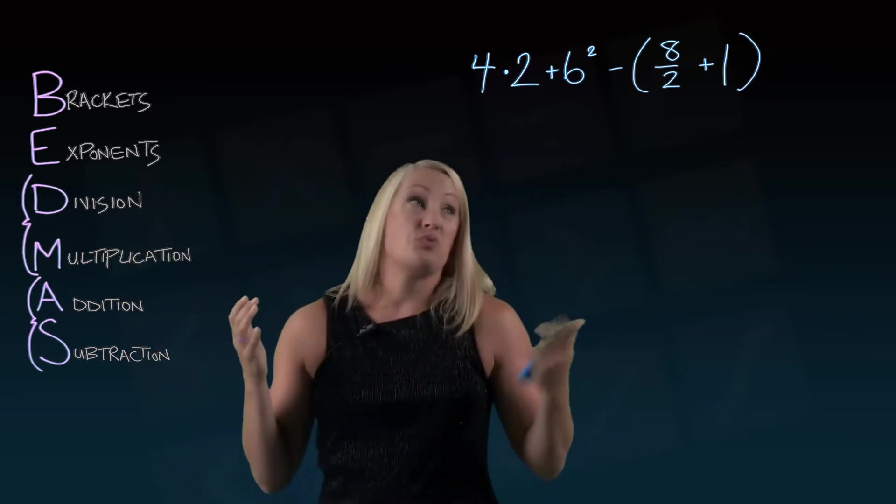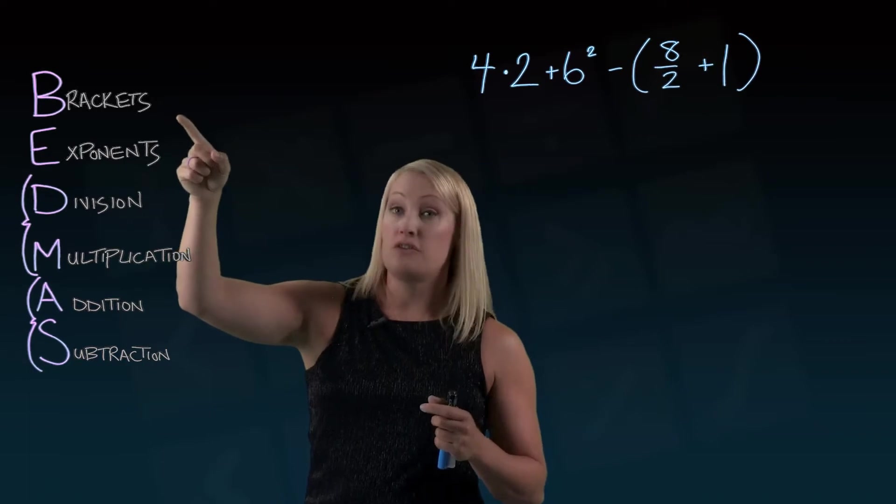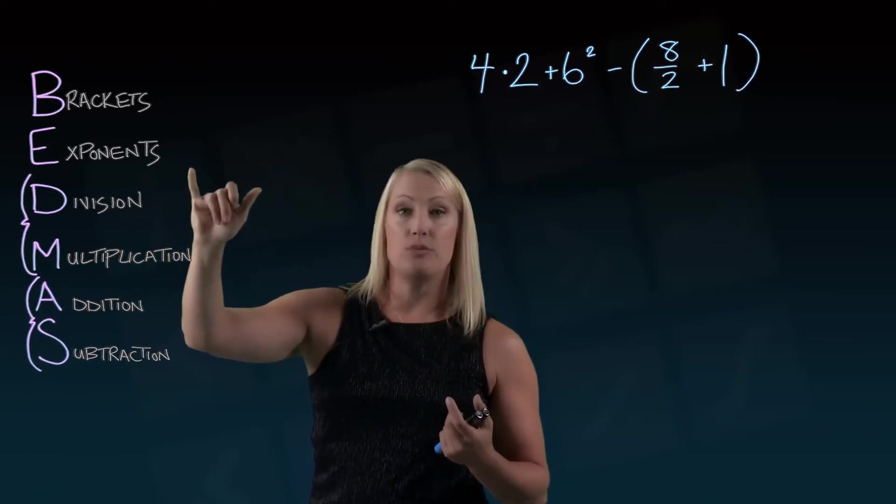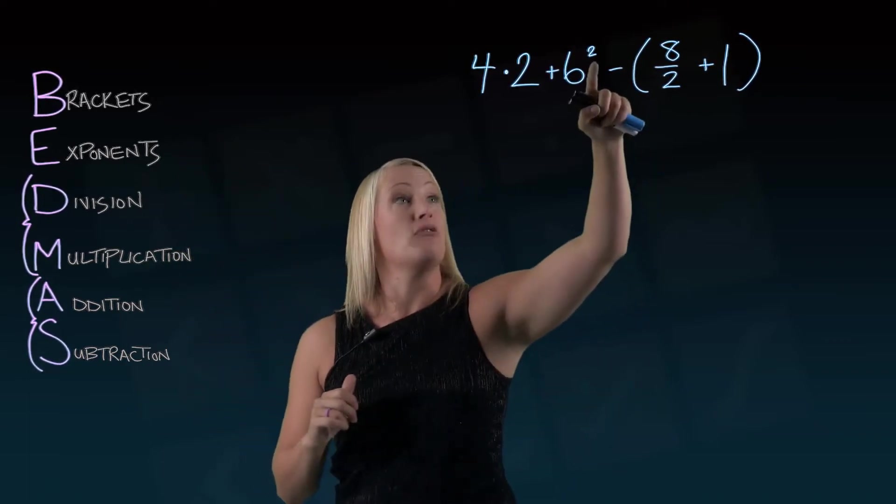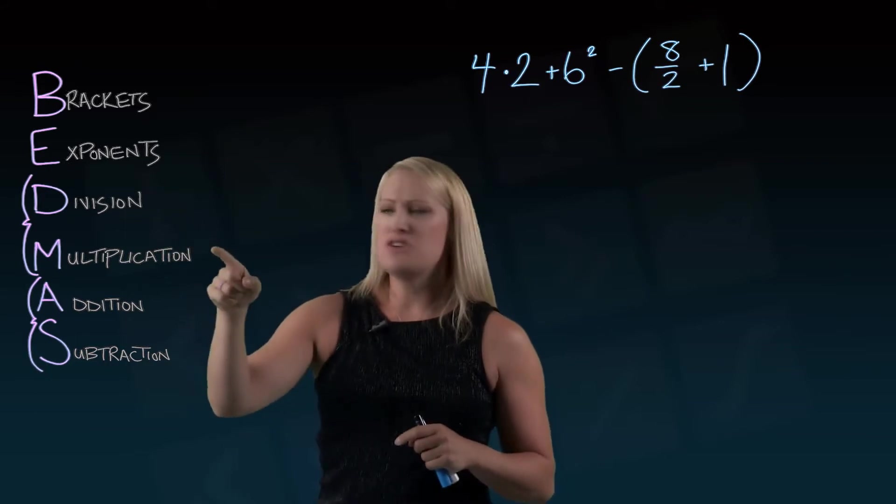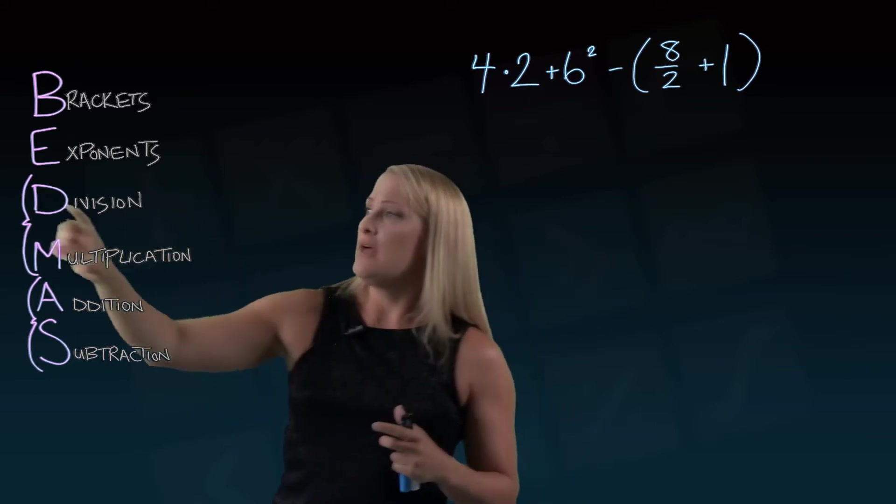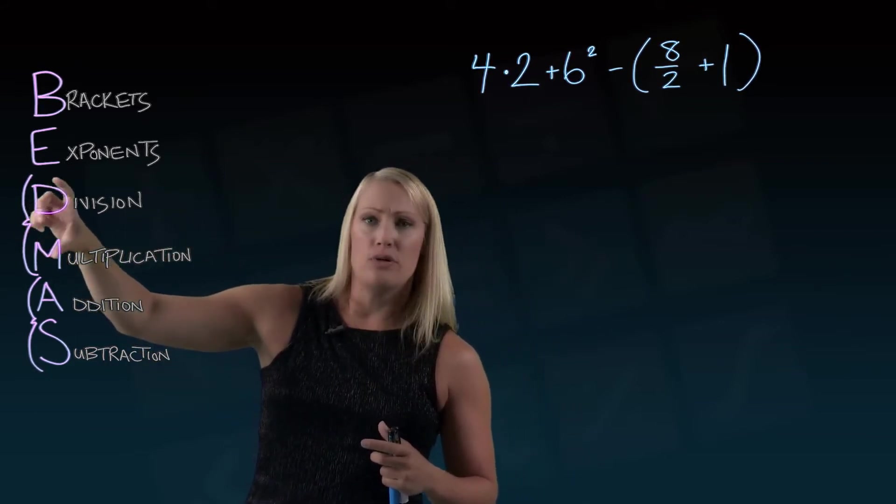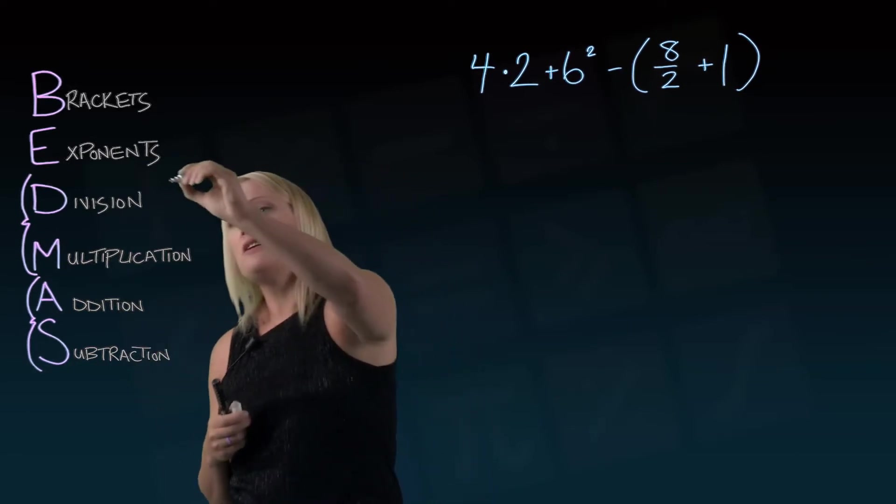So the order in which we're going to do things here, we're first going to start with brackets and then exponents like we have right there. And then division and multiplication are the next two, but you can see this arrow here pulling them together because division and multiplication, even though the D comes before the M in BEDMAS, the order actually doesn't matter.